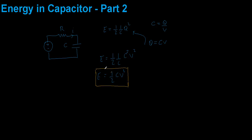You may be wondering why only half of this term is actually the energy stored in the capacitor — why is it not just one? The answer is that half of the energy actually gets dissipated as heat through the resistor. We actually lose half of the energy on the resistor and there's nothing we can do about this.